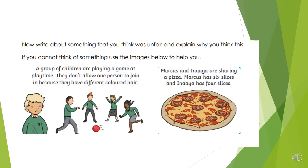Now write about something that you think was unfair and explain why you think this. Have a think about a time when you feel like something was unfair or you were treated unfairly, and write it down in your home learning record or a notebook. If you can't think of something that has happened to you, use some images below.